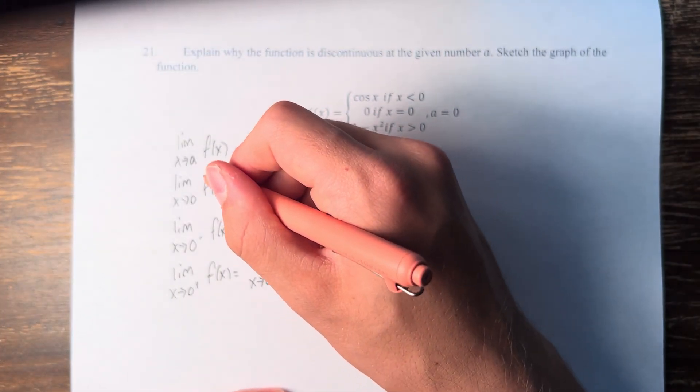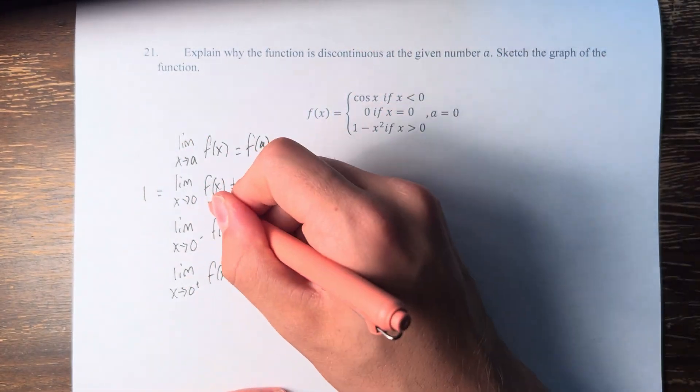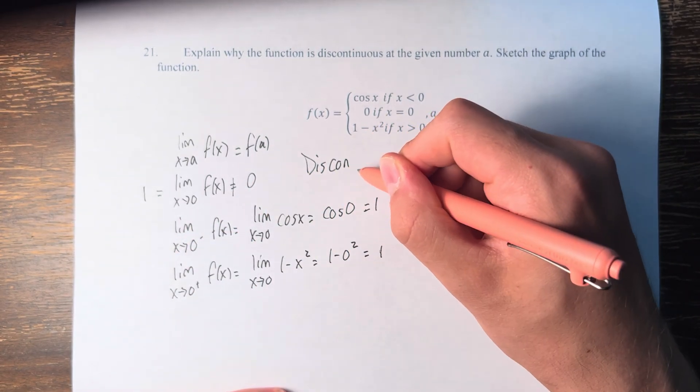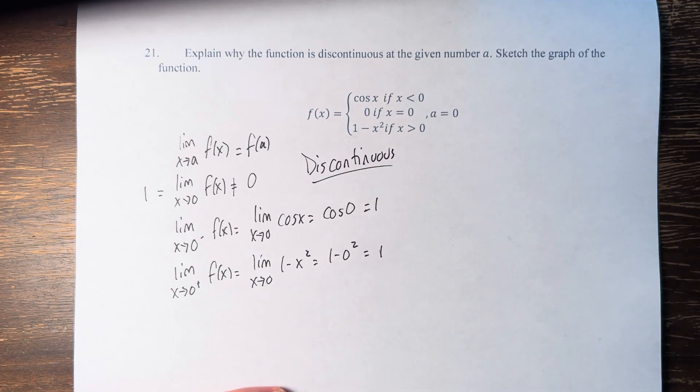Therefore the limit as x approaches 0 of f(x) is equal to 1, and therefore is not equal to 0. Therefore the function at x equals 0 is discontinuous.